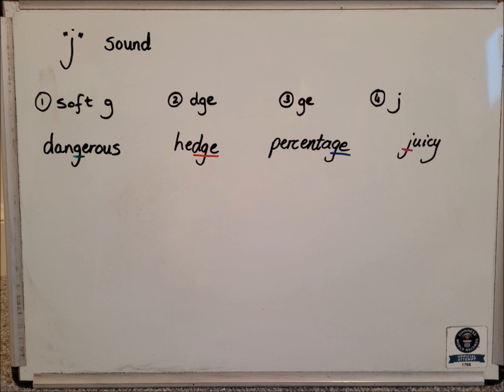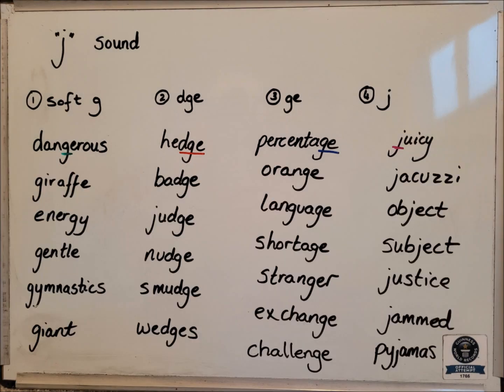Awesome guys. So let's have a look at the examples I have got — yours will probably be different to mine, but it's okay if you want to add some of my examples to your list. For soft G I have got: dangerous, giraffe, energy, gentle, gymnastics and giant. For the second rule, DGE: hedge, badge, judge, nudge, smudge and wedges.